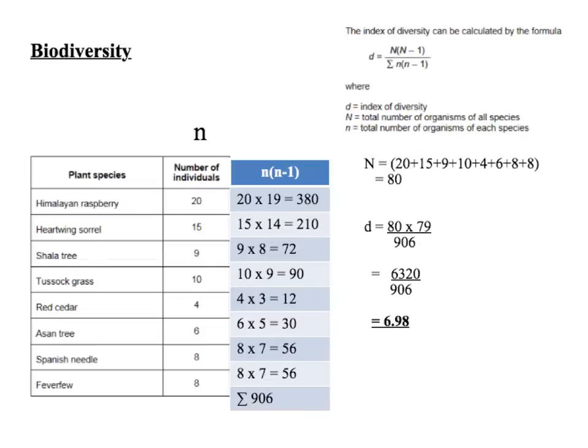That might not mean anything in itself, but if you're going to compare it to another community: if the other community had a bigger number than this, it would be more species diverse. If the other community had a lower number, it would be less species diverse than this community.